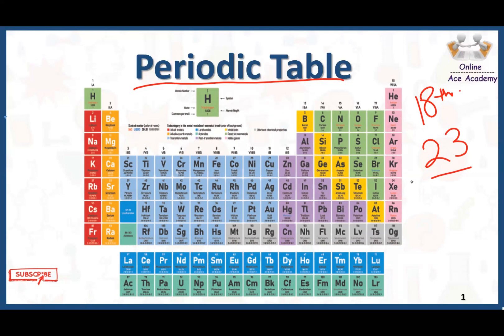Mendeleev was the scientist who tried to arrange the elements in a systematic way in the form of a table. He arranged the elements in the periodic table according to increasing atomic mass. But unfortunately, when other elements were discovered, scientists were unable to place all of them in a systematic way according to increasing atomic number in Mendeleev's table.